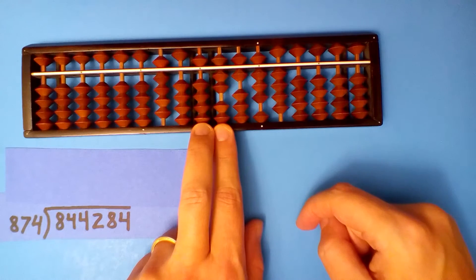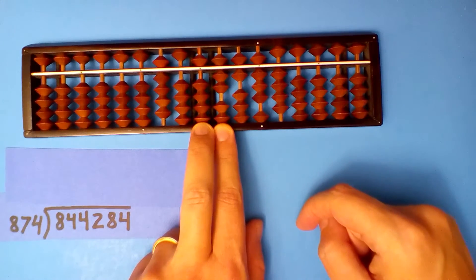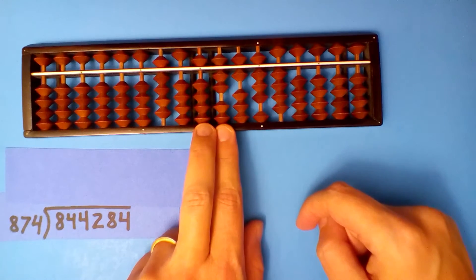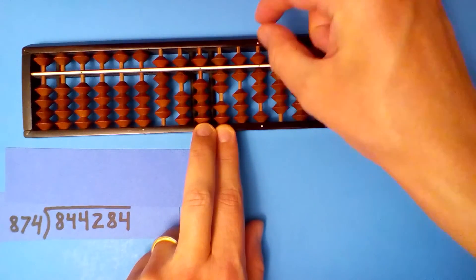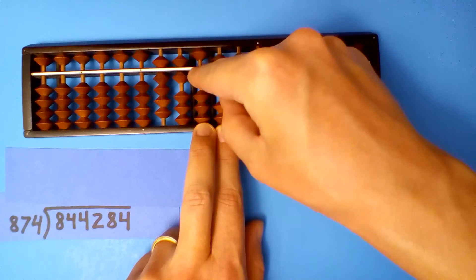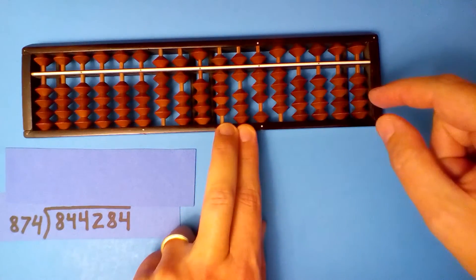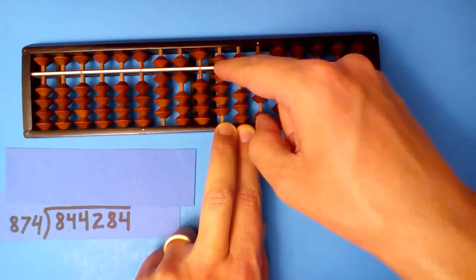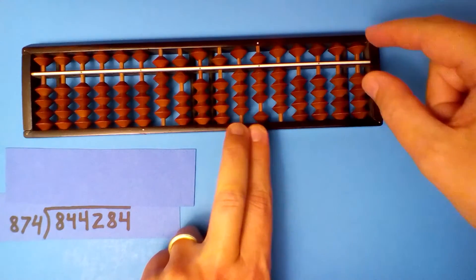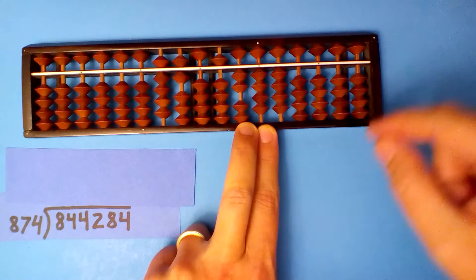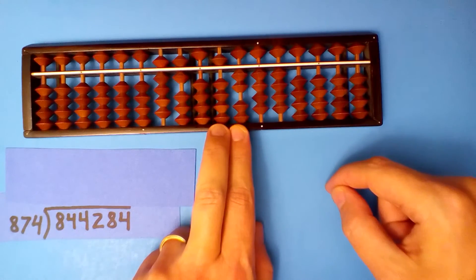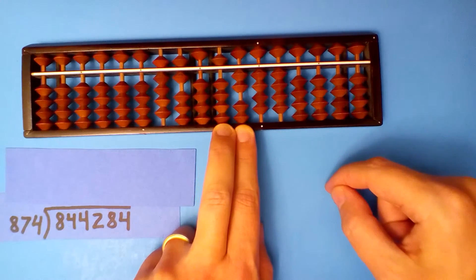8.7 into 57. Well, 8 goes into 56 seven times, but I think that'll be too much. So I'm going to say 6. 6 times 8 is 48, 6 times 7 is 42, 6 times 4 is 24.